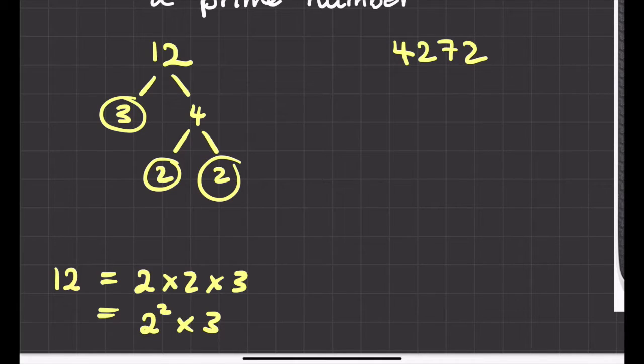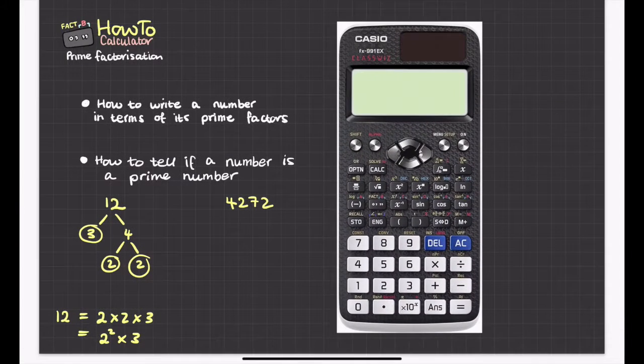And that's all right if you've got a small number like 12. But what if I've got a bigger number like this? 4,272. It's not immediately obvious how that might split up. I know I can, 2 is going to be a factor, isn't it? But, 2 times what? And then, how am I going to split that number up? Okay, so we can do this in our calculator.